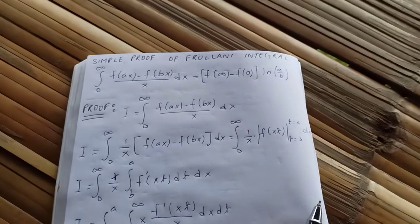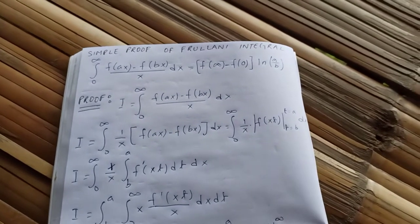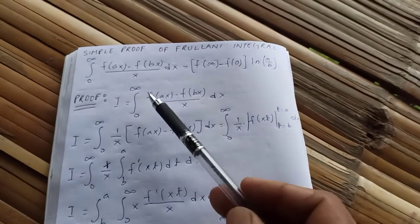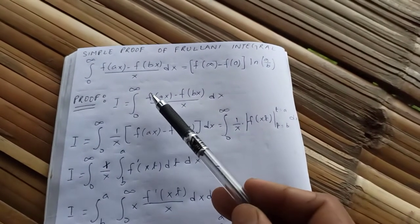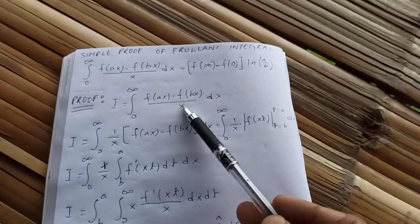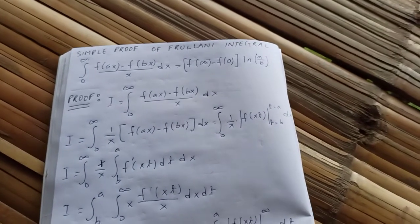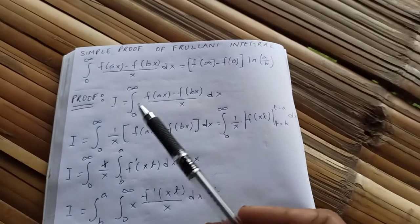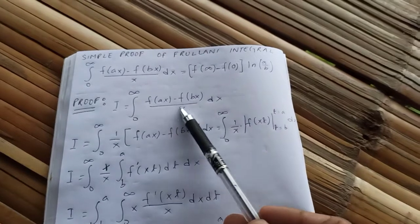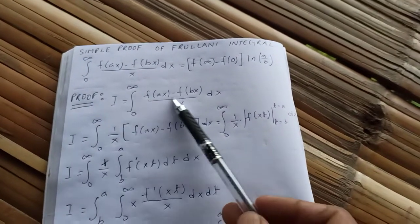Let's prove this now. Let our integral I equal the integral from 0 to infinity of [f(ax) - f(bx)] / x dx. We are going to convert this into a double integral.